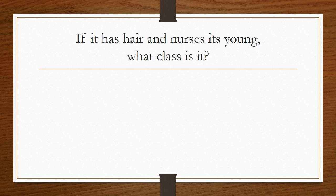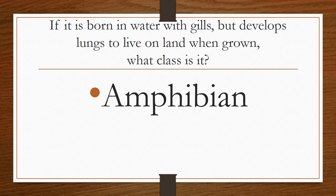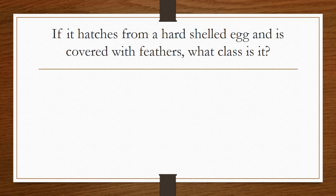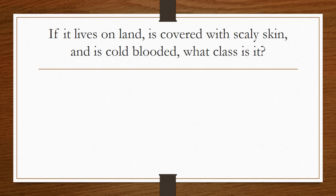On this speed round, I'm going to give you a clue and you tell me what class it's in. If it has hair and nurses its young, what class is it? Mammal. Creatures in this class go through metamorphosis — they're born in water with gills but develop lungs and live on land when grown. What class is this? Amphibians. If it lives in water its entire life, breathes through gills, and has fins, what class is it? Fish. Animals in this class hatch from eggs and are covered with feathers — what class? Birds. If it lives on land, is covered with scaly skin, and is cold-blooded, what class is it? Reptile.